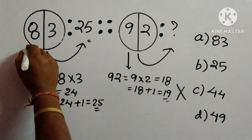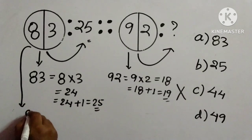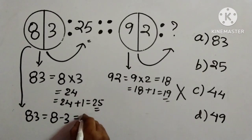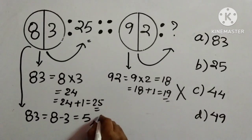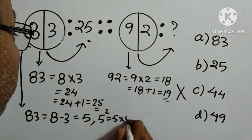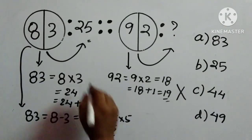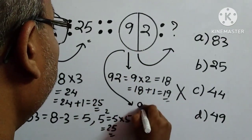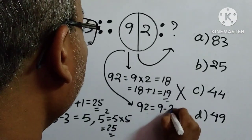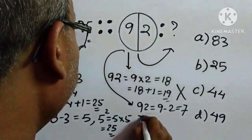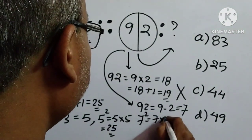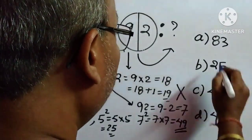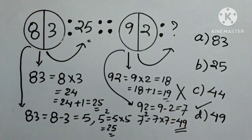We try a different approach. Again we consider 8 and 3, and subtract: 8 minus 3 is 5. We square it: 5 squared is 5 into 5, which equals 25 — which is given. Now we apply the same to 9 and 2: 9 minus 2 is 7. We square it: 7 squared is 7 into 7, which equals 49. So 49 is the answer — option D.